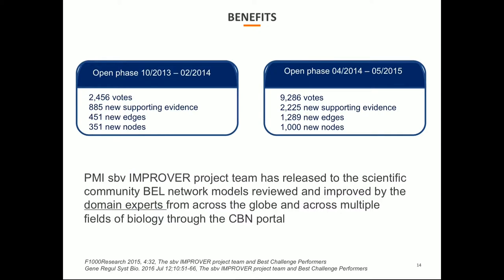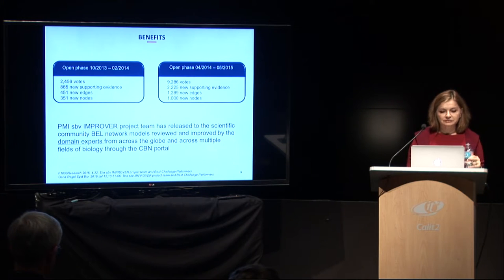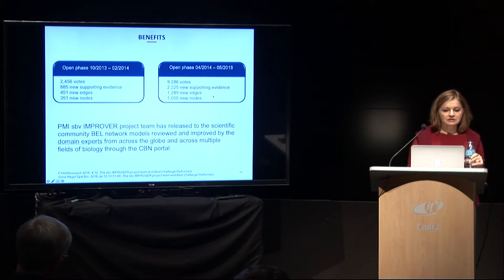There were two phases. In the first phase there were roughly 2,500 votes for different pieces of evidence — people voting up or down on evidence supporting edges, and if they didn't believe it, they would give a reason: not the right cell type, not the right experimental condition, not the right experiment to state a direct interaction — perhaps it should be changed to indirect interaction. In the second session there were more than 9,000 votes, and in addition, a number of new edges and new nodes were added to the networks.